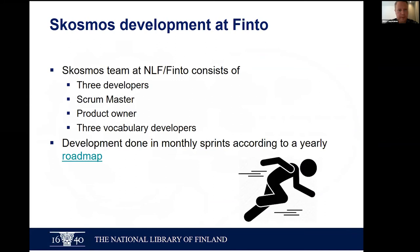A bit more about the actual SKOSMOS team at Finto: we have three developers and a scrum master. We try to do development in scrum sprints - monthly sprints, following agile methods. Although we try to be relatively agile in developments, we have a yearly roadmap - a rough outline for SKOSMOS development for a specific year. But if there are new things coming, new needs from users, or serious bugs, we try to get them into development as soon as possible.